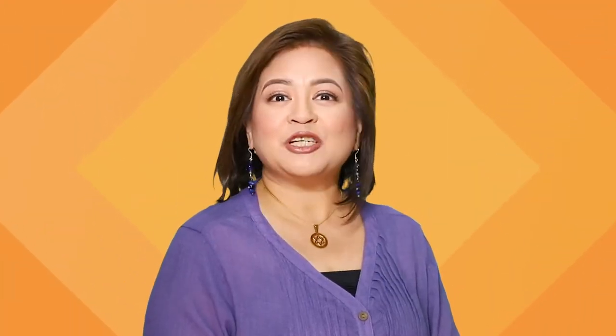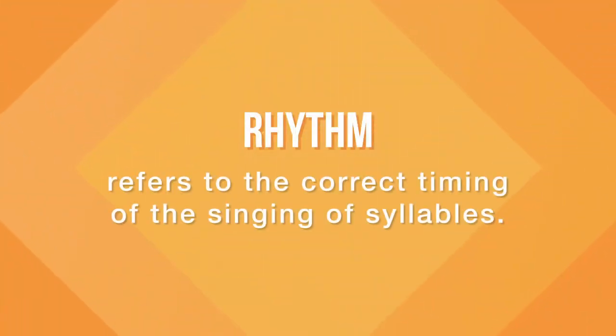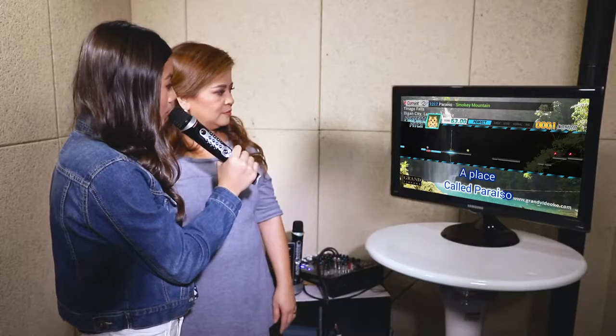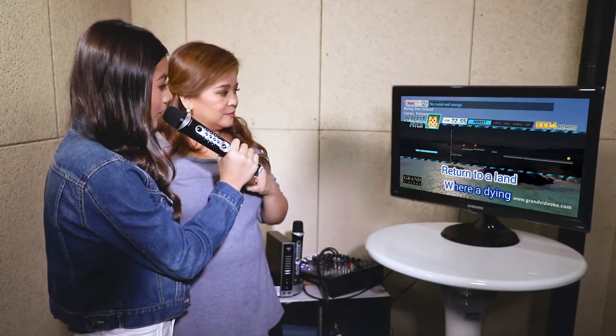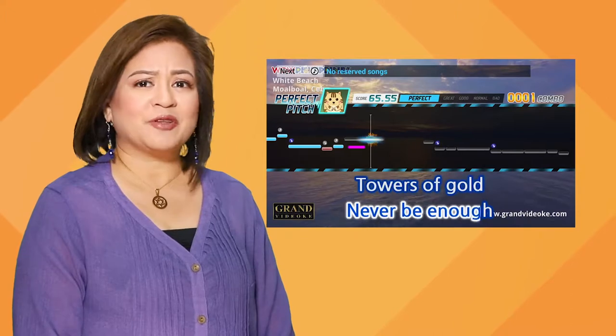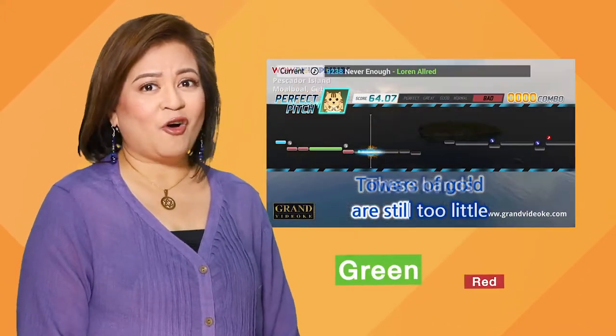Another term that you will see on the perfect pitch feature of Grand Videope is the word rhythm. Rhythm refers to the correct timing of the singing of syllables. Rhythm is rated in combination with key. There is a visual confirmation of your timing for every movement of the melody. Sometimes your key can be correct, but if your rhythm is wrong, the color will turn green or red.